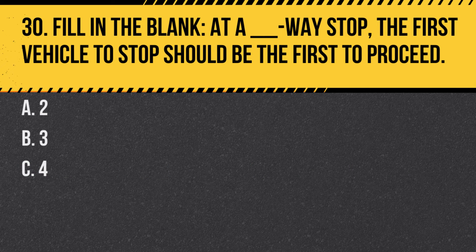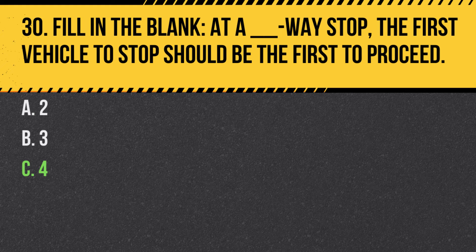Question 30. Fill in the blank. At a ___-way stop, the first vehicle to stop should be the first to proceed. a. 2. b. 3. c. 4. Answer: c. 4. At a four-way stop, the vehicle that stops first should move first, following the right-of-way rules.